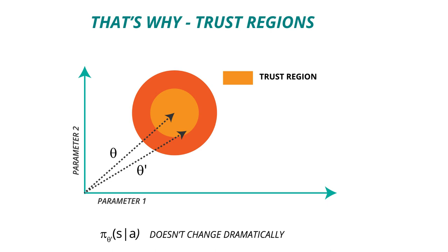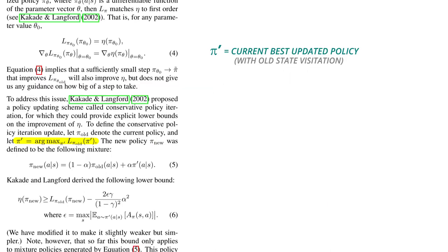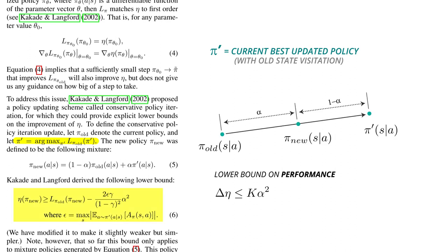This is exactly why we need trust regions. It tells us that even if you found the best policy, we will take small steps in that direction. This conservative policy iteration gives us an explicit lower bound on the improvement of eta. Any policy update within this region can be trusted to not lead to dramatically bad policy degradation.